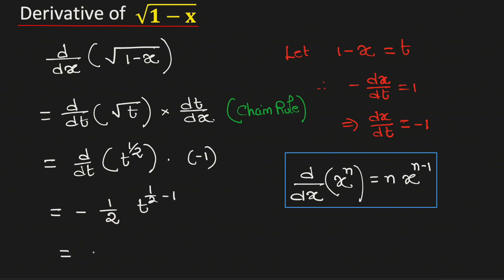Simplifying, we get negative 1 by 2 square root of t. Now we will put the value of t which is given here. So this will be equal to negative 1 over 2 square root of 1 minus x.